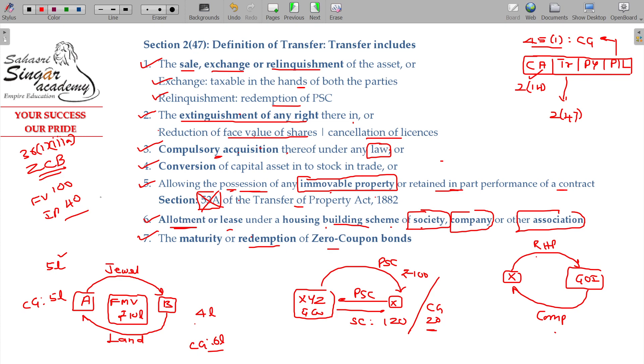As you are the zero coupon bond holder, when it is redeemed - you bought it for 40 rupees, you get 100 rupees - this 60 rupees difference is called capital gain. That redemption on maturity, or if you sell, that is also considered as transfer.